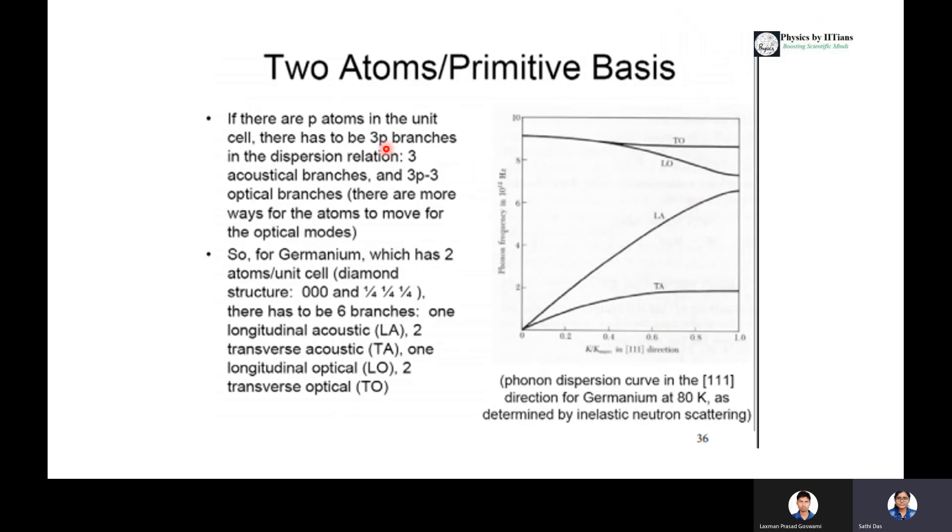In the case of a realistic example, if there are P atoms in the unit cell, there will be 3P branches in the dispersion relation: 3 acoustical branches and 3P minus 3 optical branches. Suppose we are taking germanium, which has 2 atoms per unit cell or diamond structure. How many branches will be present? Total 6 branches because 2 atoms have 3 times 2 branches in dispersion relation: 1 longitudinal acoustic, 2 transverse acoustic, 1 longitudinal optical and 2 transverse optical.